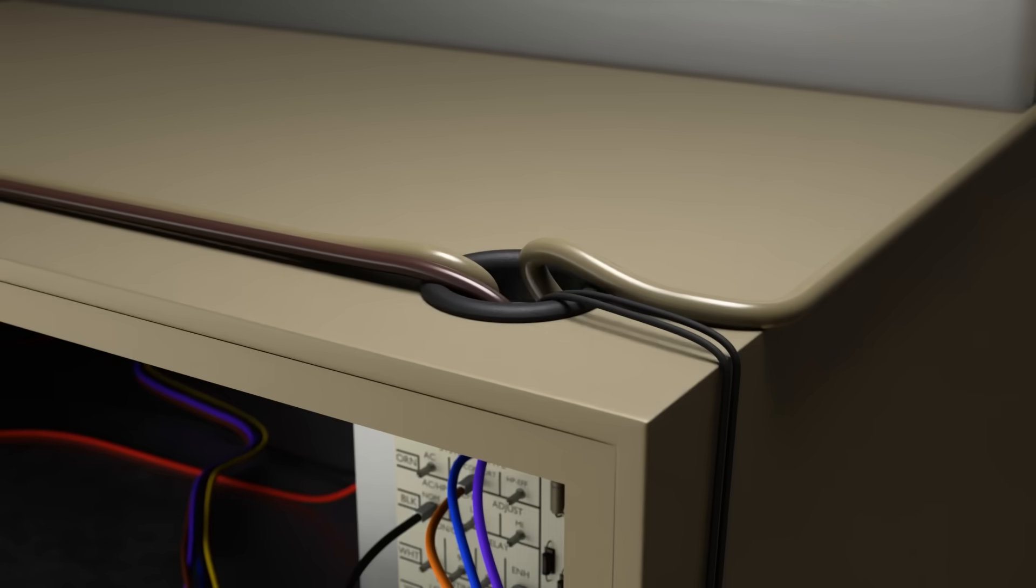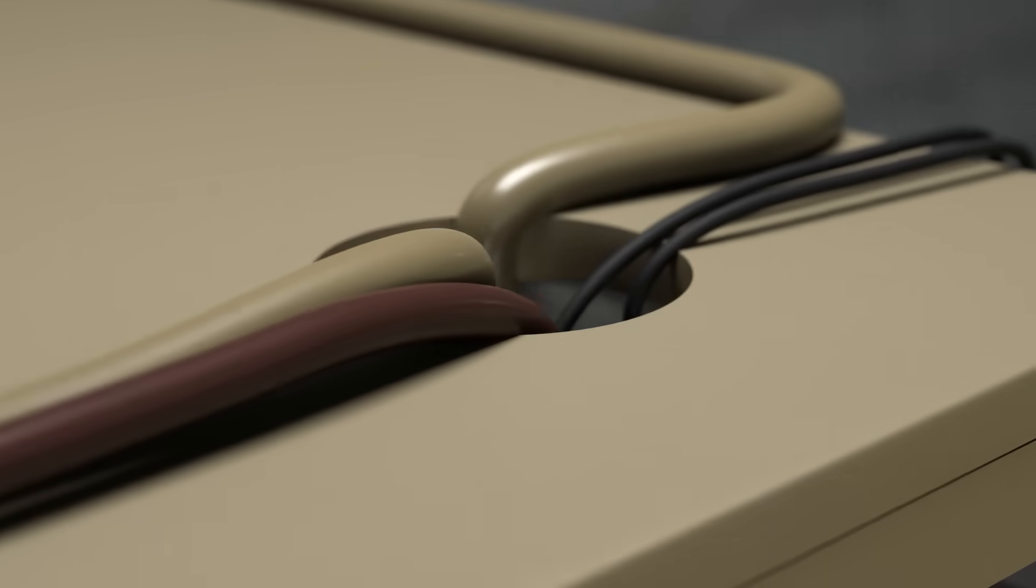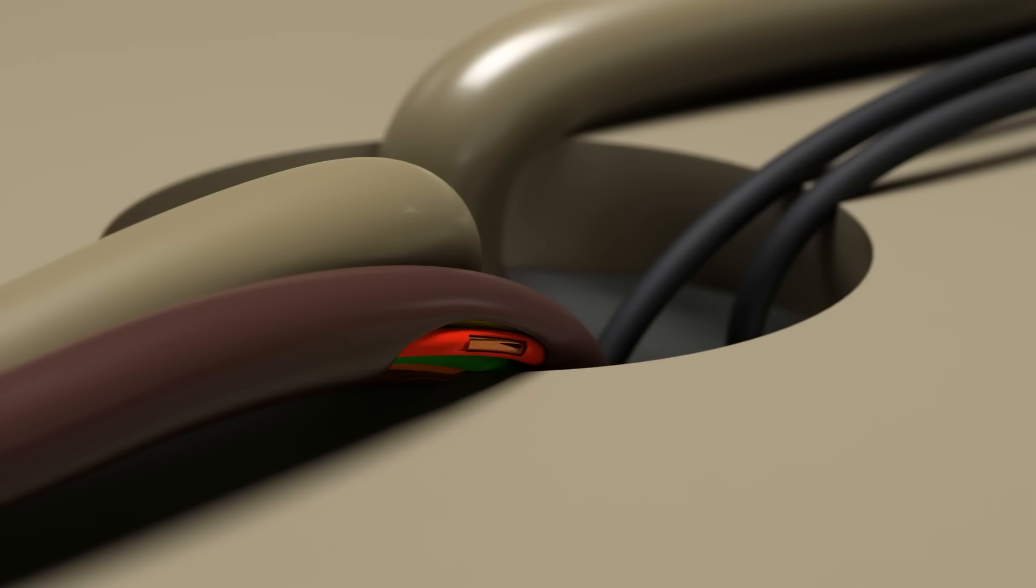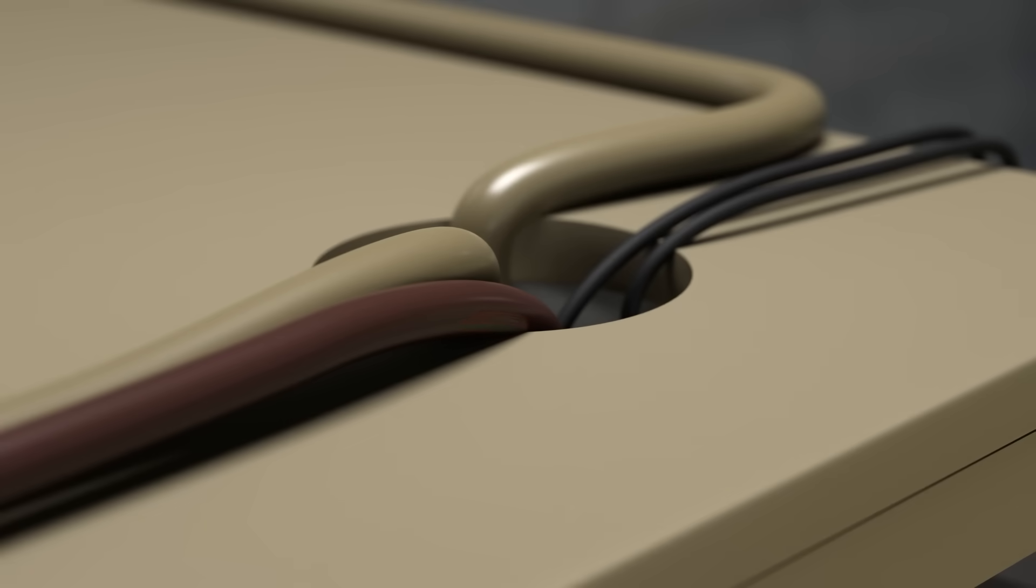Make sure to use appropriate grommets or connectors when routing wires or cables through the cabinet. This is a common source of chafing and abrasions, which can lead to short circuits if done improperly.